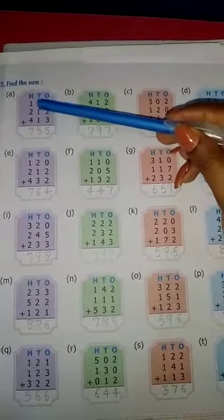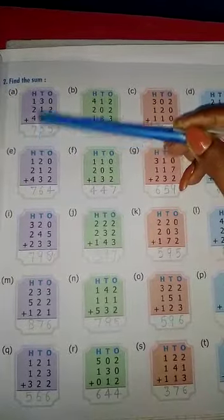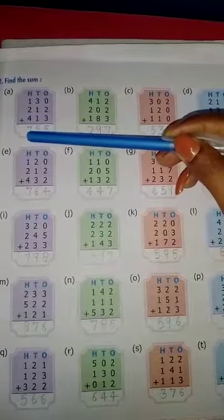And 3 plus 1 plus 1 is equal to 5. 1 plus 2 plus 4 is equal to 7.